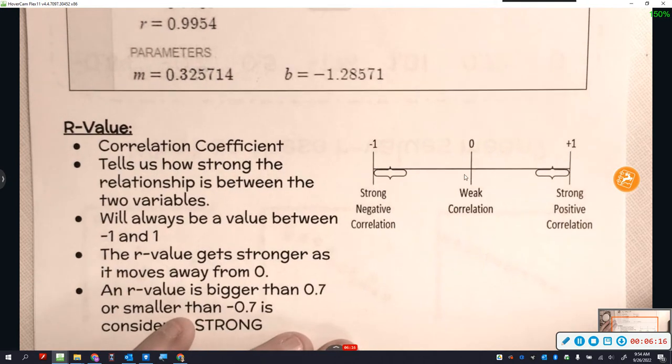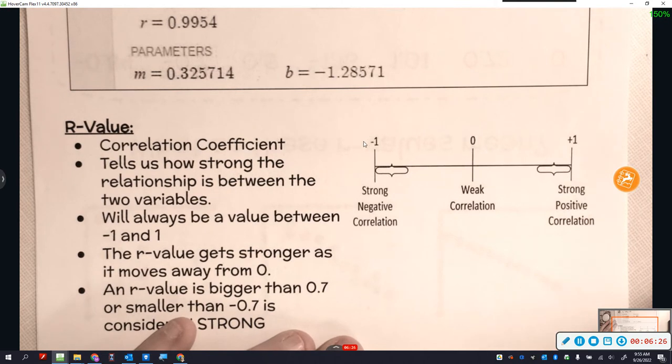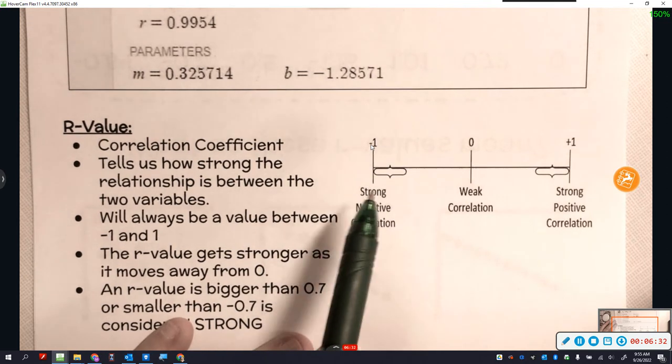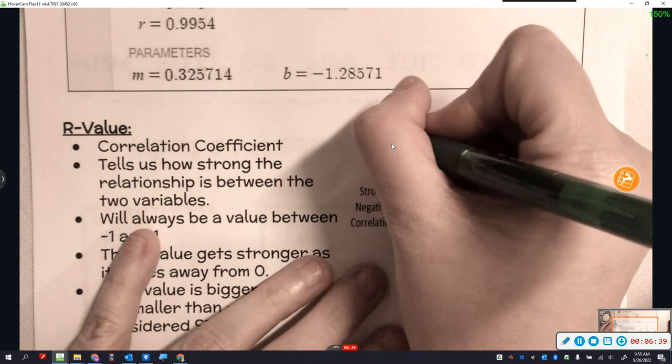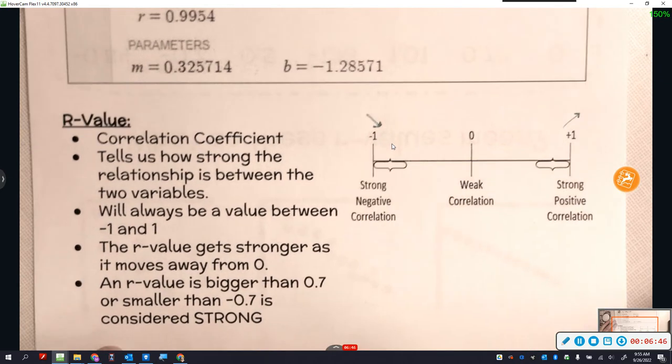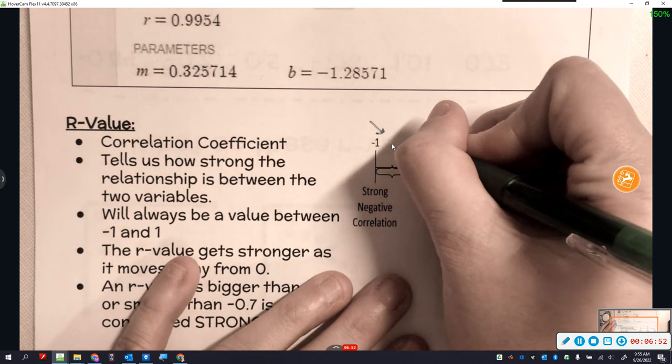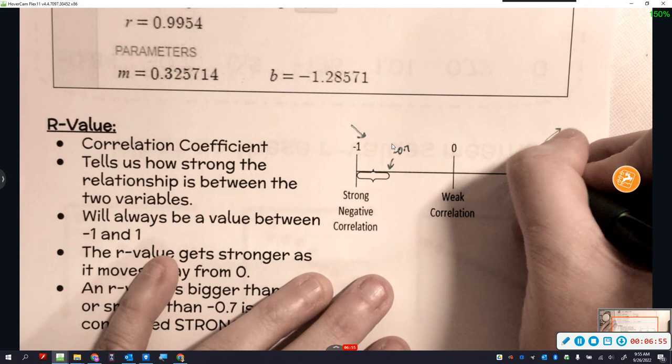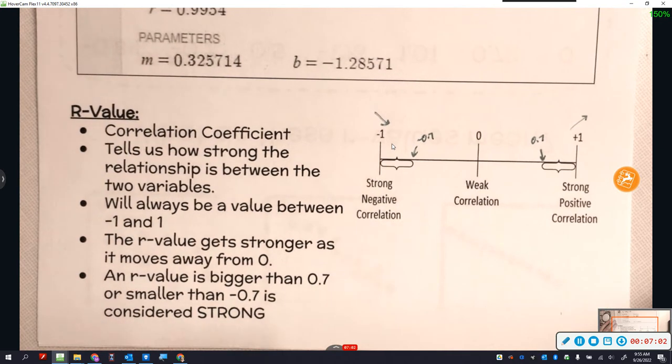If you see like 1.8 R value, it's not an R value. R value goes from negative 1 to positive 1. Now the R value gets stronger as it moves away from 0, as it moves closer to negative 1 and positive 1, it becomes stronger. The sign of the R value tells me whether I have a positive or negative correlation, meaning is the line going uphill or downhill? For this one I have a positive correlation. For this one I have a negative correlation. The closer it is to the outside, the stronger it is.